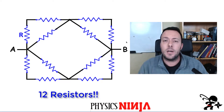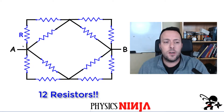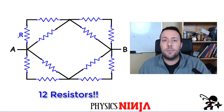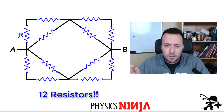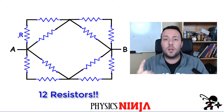Let's go see how we set this problem up. I'm going to assume that all the resistance values are going to be the same and they're all going to be just the value R. And I'll be able to simplify this network into one equivalent resistor.